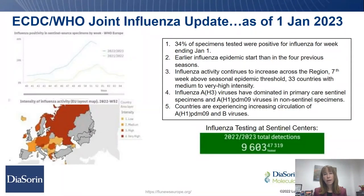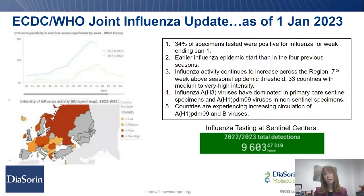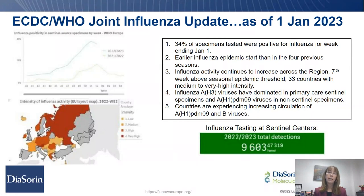A similar update from the European Union via the ECDC and WHO joint influenza website shows about 34% of specimens testing positive for flu for the week ending January 1st. Just as in the US, there was an earlier influenza epidemic start than the previous four seasons. This was predicted by what we saw in the Southern Hemisphere — Australia saw an early flu season with a big pediatric impact and more severe illness in that population, and we're seeing similar things in the Northern Hemisphere.